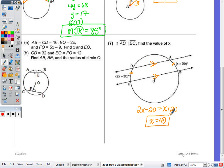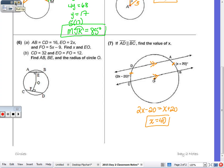Alright, number 6. In that picture, we're told that length AB is equal to length CD, so the chords are congruent. E to O is 2X, and F to O is 5X minus 9. Find X and EO in part A. In part B, we're given CD is 32, and EO is equal to FO, which are both equal to 12. Find AB, BE, and the radius of circle O.